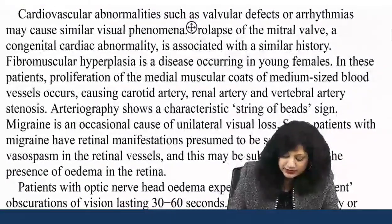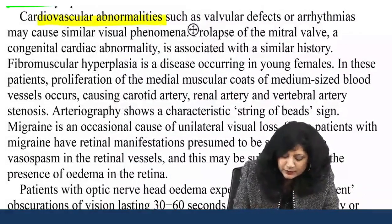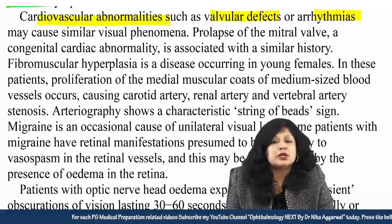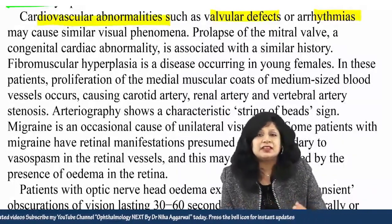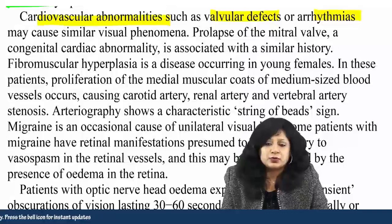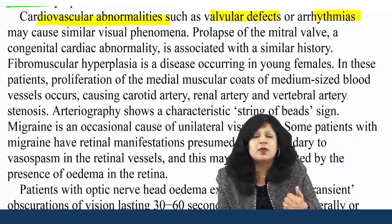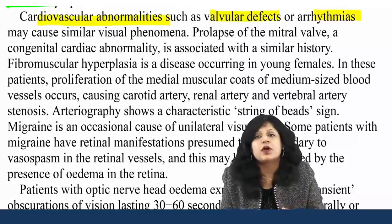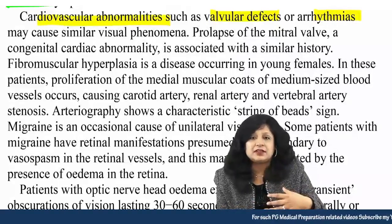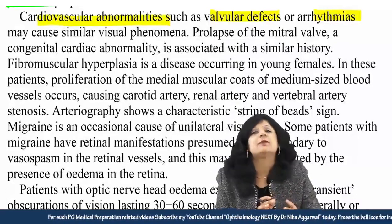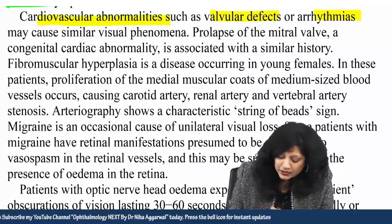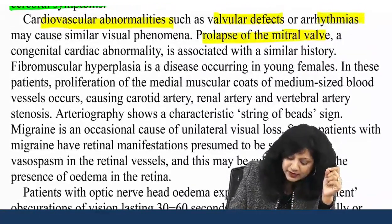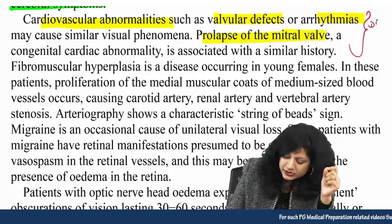Persons having cardiovascular abnormalities — valvular defects, arrhythmias — can also come up with amaurosis. There is no need to cram like a list; if you grasp the concept of why we have amaurosis and what conditions lead to it, they will obviously become the causes. There can also be prolapse of the mitral valve giving a similar kind of history. Another important entity is fibromuscular hyperplasia, occurring in young females, where there is proliferation of the medial muscular coats of medium-sized blood vessels — carotid artery, renal artery, vertebral artery — and importantly, angiography will show a 'string of beads' sign in fibromuscular dysplasia.